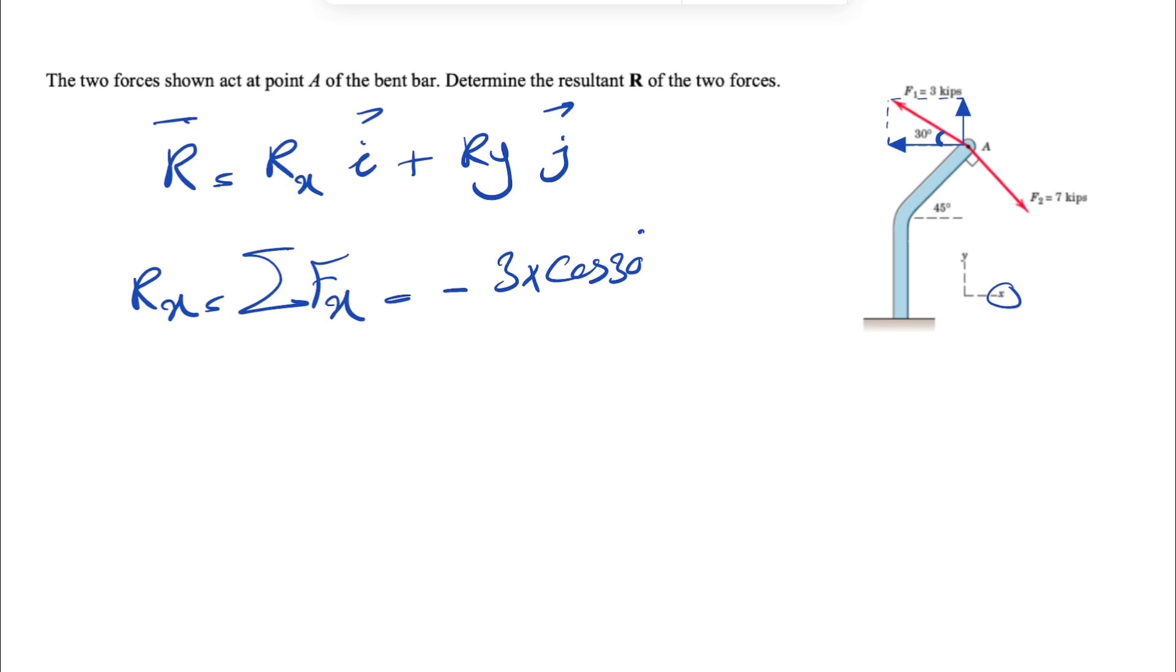We also have the X component of force F2, which is this component here. We can show the Y component as well. To find the X component, we need to figure out this angle. We know that F1 makes a 90 degree angle with the bar, but we also have this angle here, 45 degrees, which means this angle is also 45 degrees.